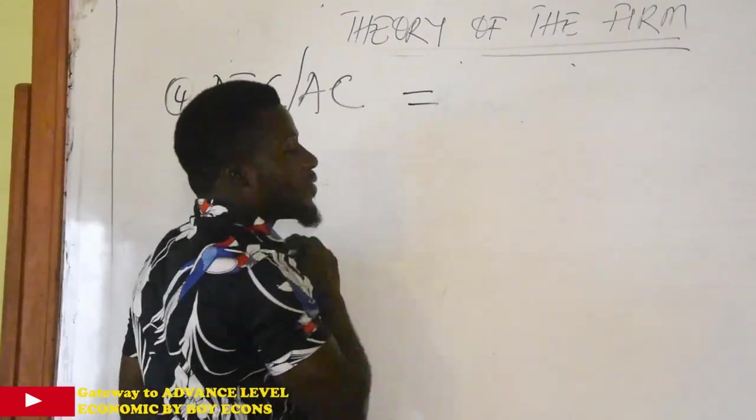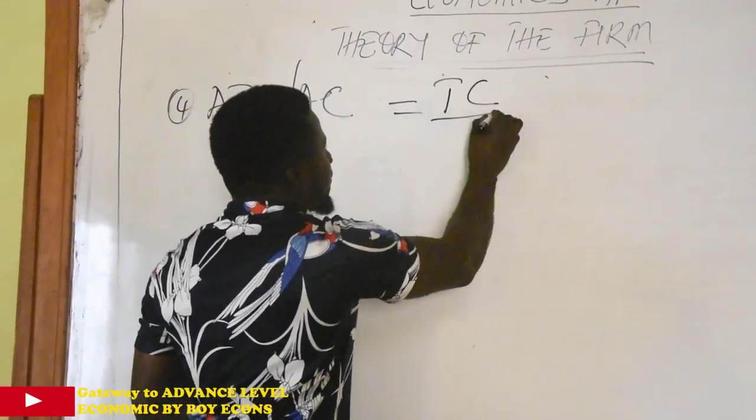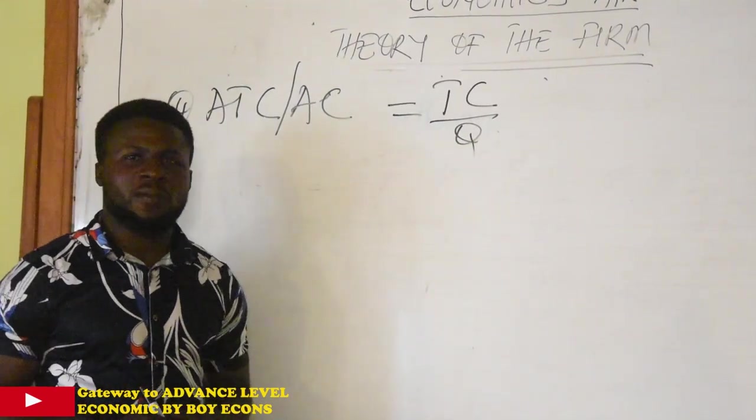So we calculate average total cost in two ways. Firstly, we can take total cost divided by output, that will give us our average total cost.